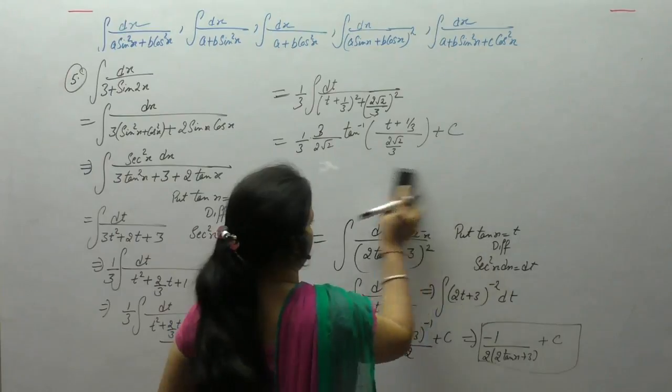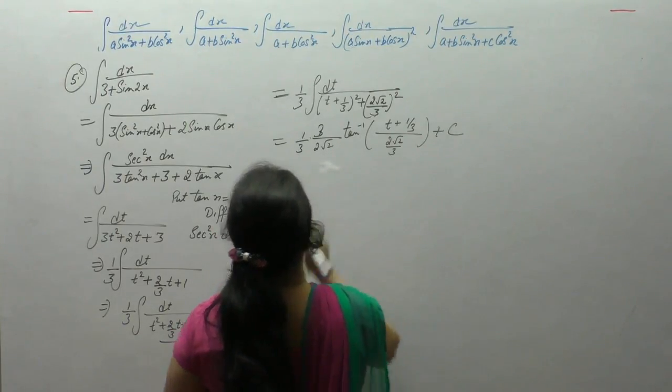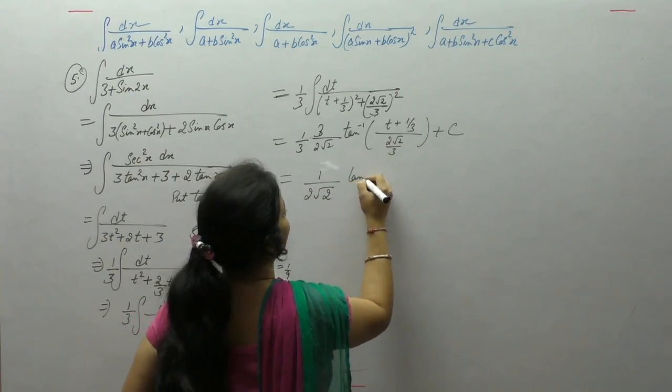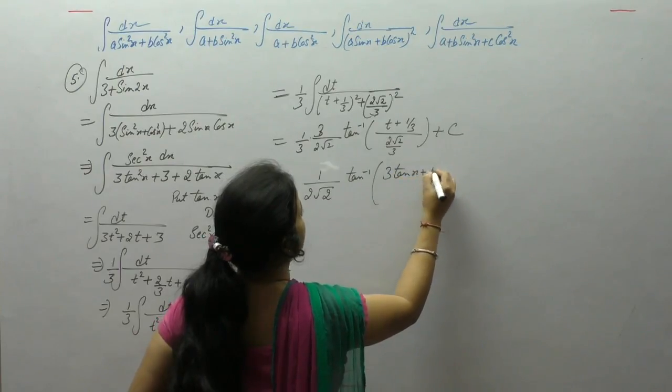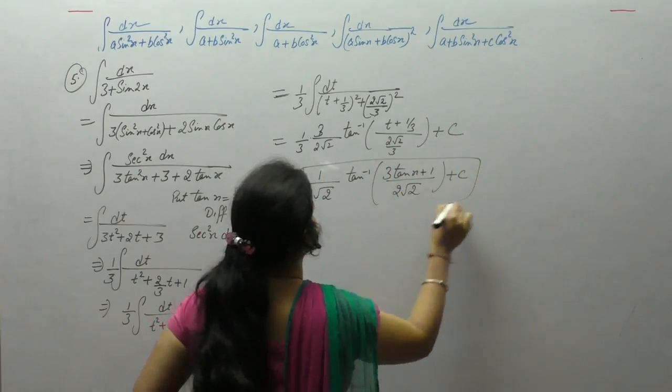1 by 2 root 2, tan inverse 3 tan x plus 1 upon 2 into square root of 2 plus c.